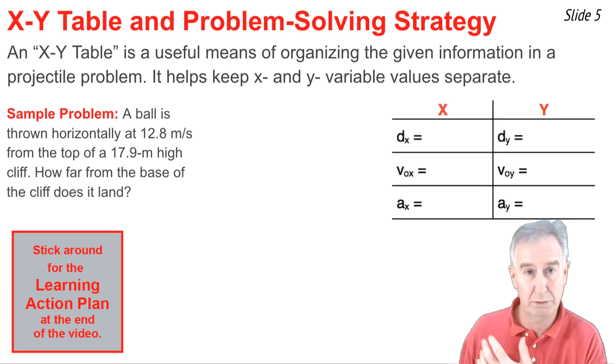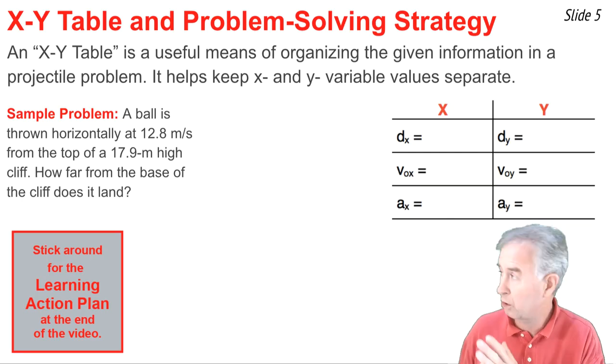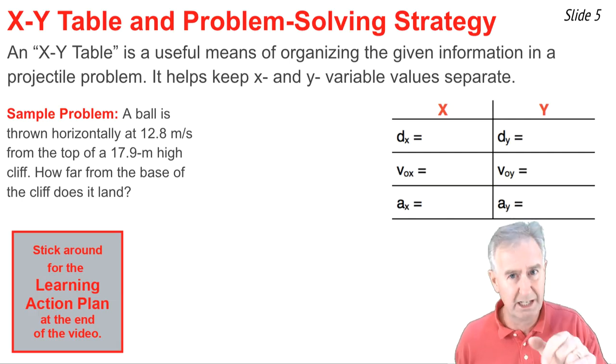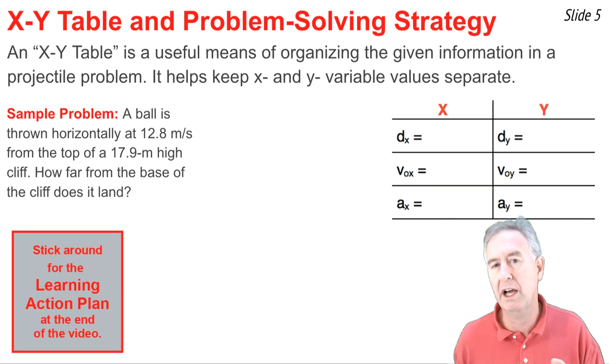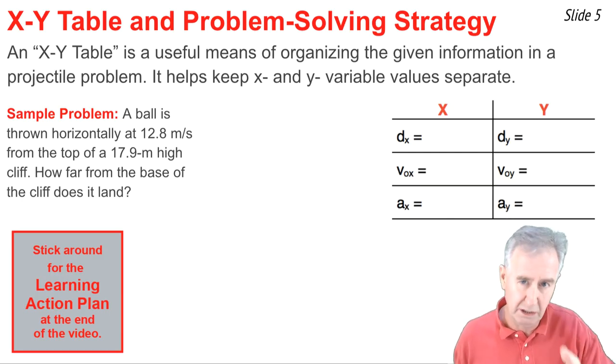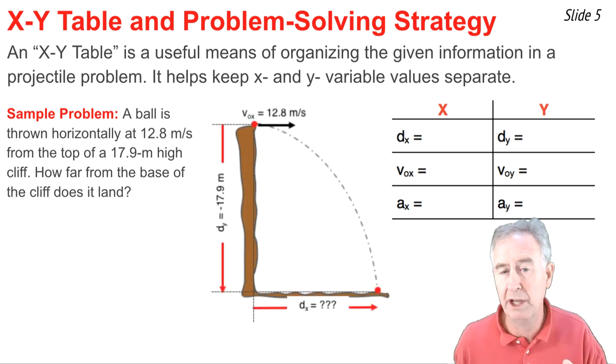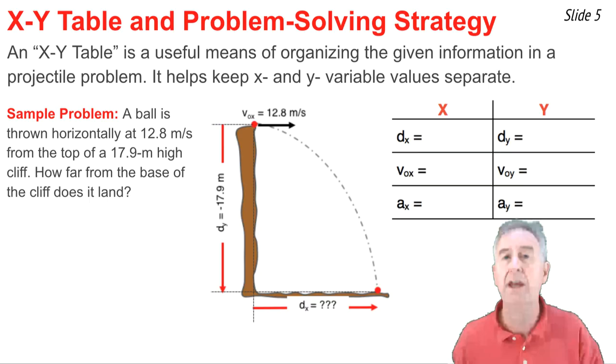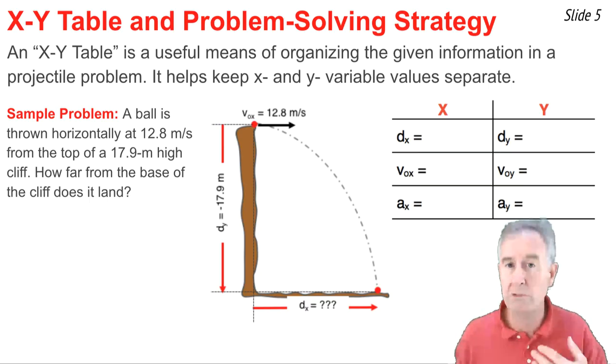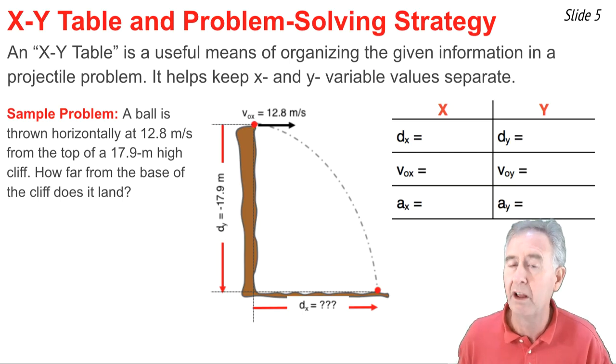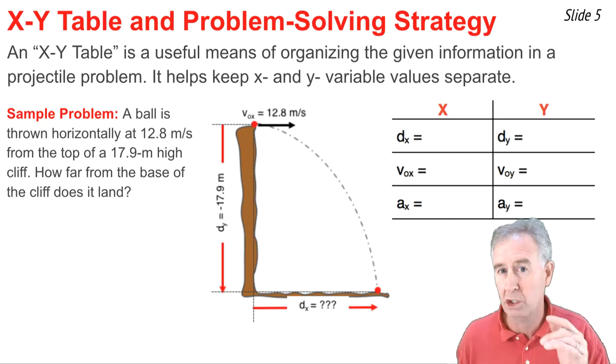Here's the problem I'm going to model the solution to. The first step is to read and diagram. A ball is launched horizontally at 12.8 meters per second. I pay attention to units and that tells me this has got to be a velocity. From the top of a 17.9 meter high cliff, that sounds like a distance vertically. And then it says how far from the base of the cliff does the ball land. Here's my diagram. I draw a cliff and some ground below. The ball starts at the top and lands on the ground. And I label DX, DY, and VOX, the original velocity of the ball.